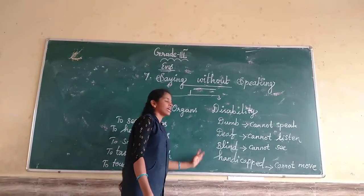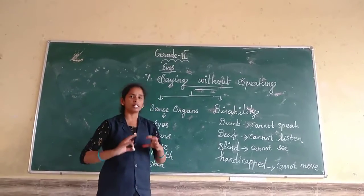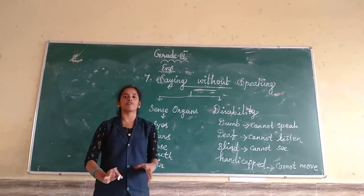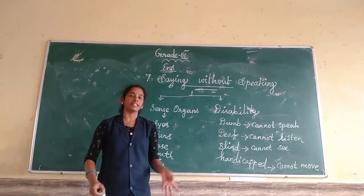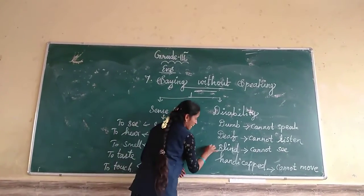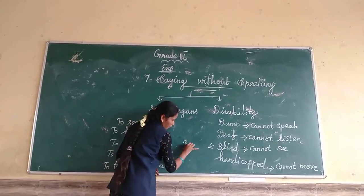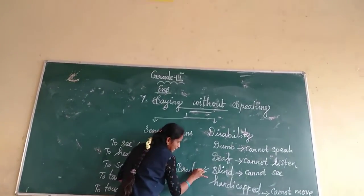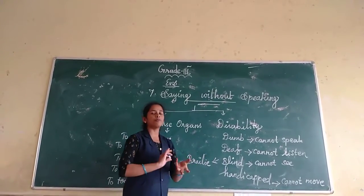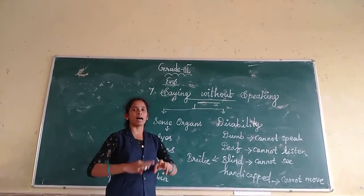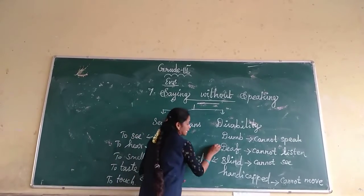This lesson is fully about the deaf and dumb, and also the blind. The blind people can study by using Braille. The deaf and dumb people can understand through lip movement.